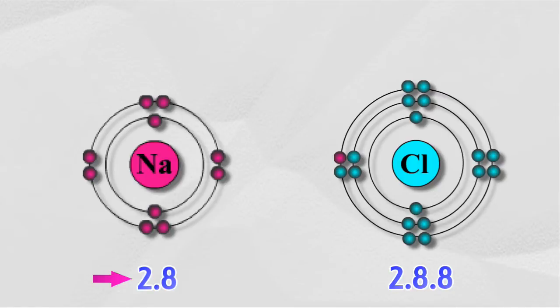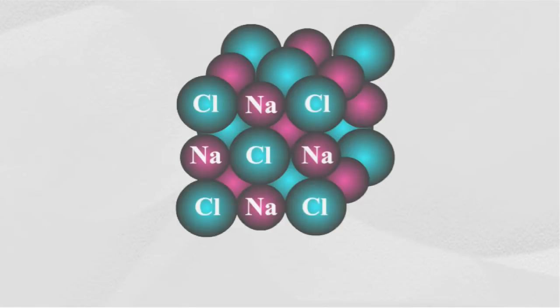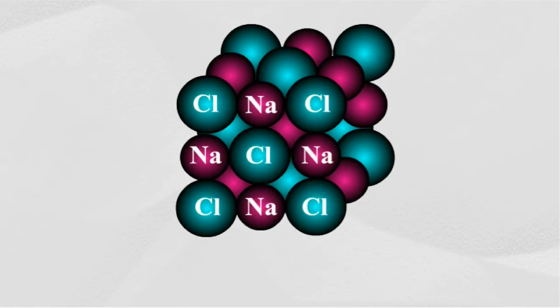Sodium ion achieves a stable electron arrangement of 2.8. Chlorine atom receives one electron to form a negatively charged chloride ion. Chloride ion achieves a stable electron arrangement of 2.8.8. A strong electrostatic force pulls the sodium ion and the chloride ion together, and an ionic bond is formed.